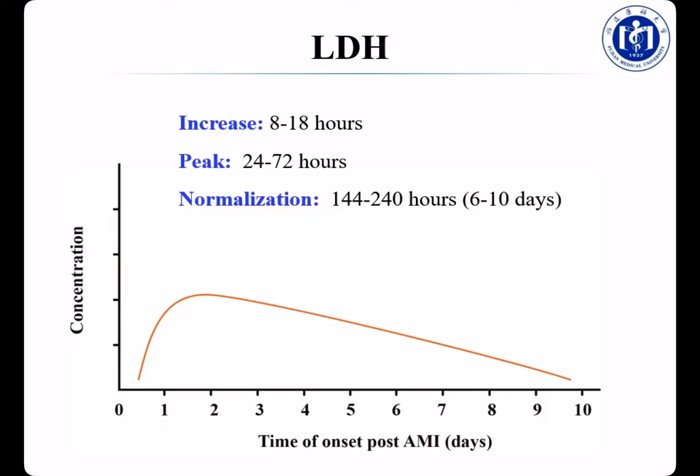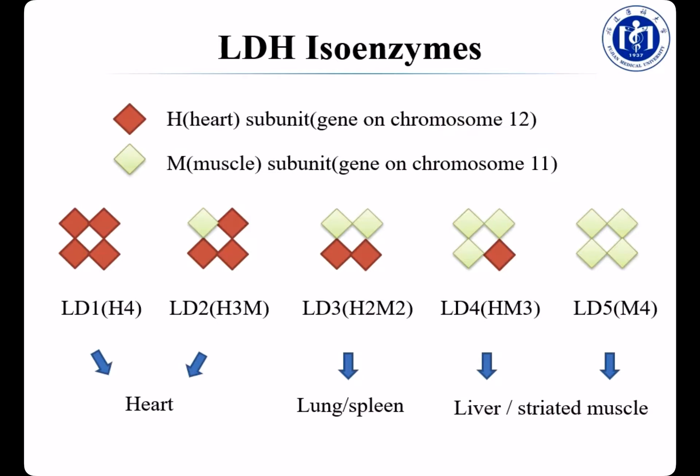For a patient with AMI, LDH starts to increase 8–18 hours after onset of pain, reaches the peak 24–72 hours, and lasts for a relatively long time — about 6–10 days before falling to normal. So LDH can be used for the late diagnosis of AMI. For example, if a patient comes to see you saying they had severe chest pain a week ago, and you suspect AMI, you can order the LDH test — because CK and CKMB have already fallen to normal range, but the level of LDH is still elevated after a week.